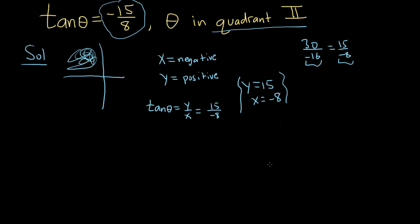So now that we have x and y, we can find r. So recall that r is equal to the square root of x squared plus y squared. So this is equal to the square root of 15 squared plus negative 8 squared. So this is equal to, so 15 squared is going to be 225, and 8 squared is 64. And so when you add these, you will get 289. And the square root of 289 is going to be 17. So we have r equals 17.